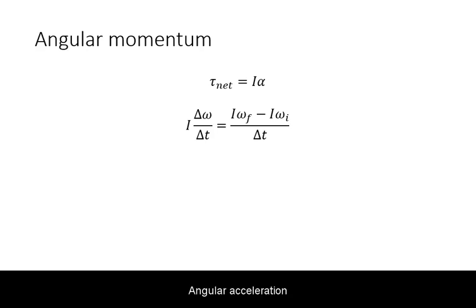Angular acceleration can be rewritten as the change in angular velocity divided by the change in time. Hence, we can rewrite the equation as the change in the quantity I omega over change in time.